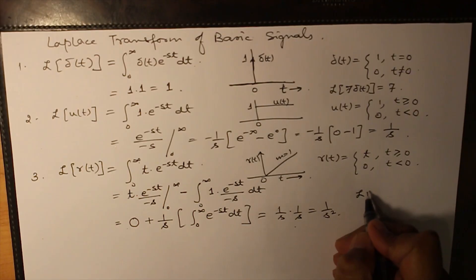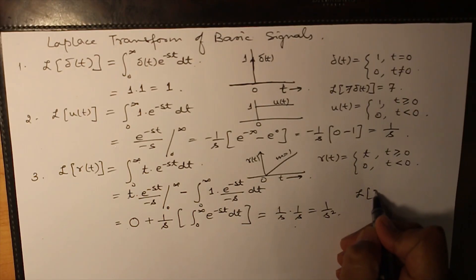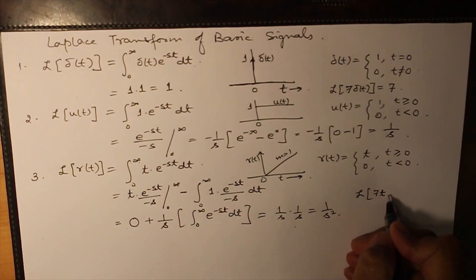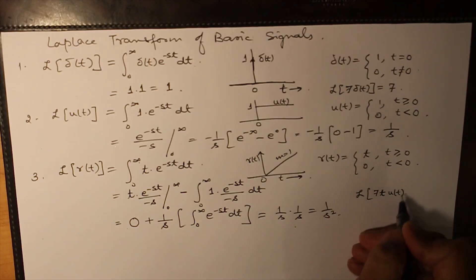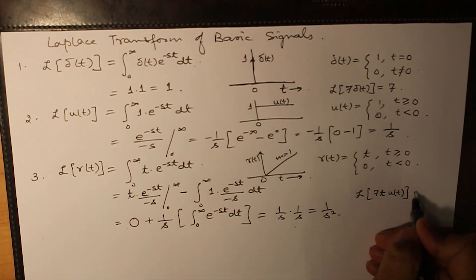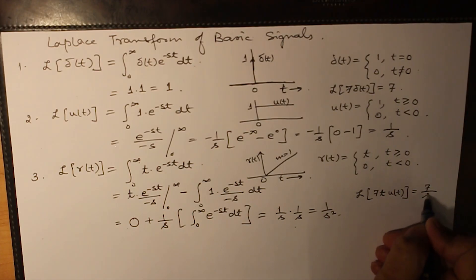Now if you have the Laplace transform of 7t u(t), it will be equal to 7 over s squared.